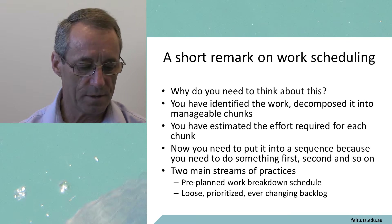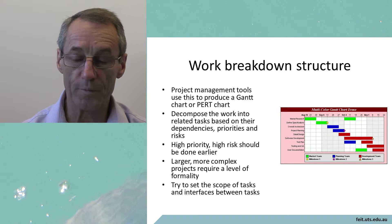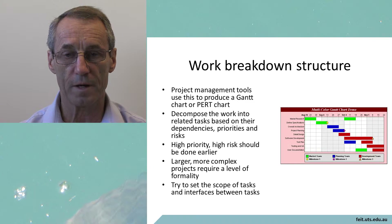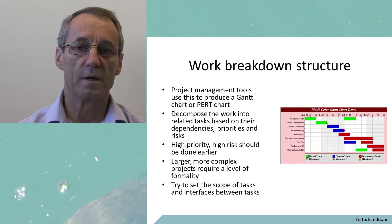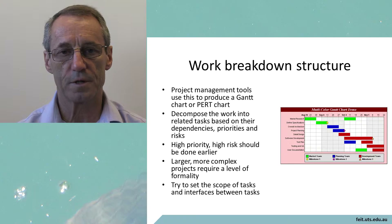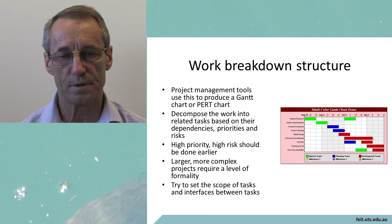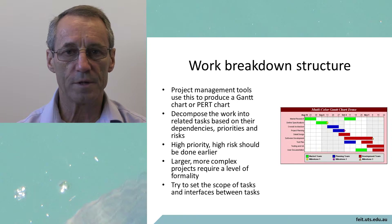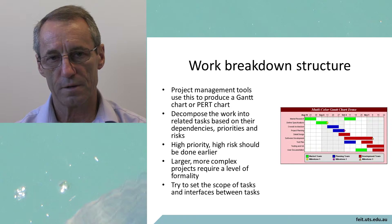There are two schools of thought with this. One is the formal management approach, where you create a Gantt chart full of dependencies and associations. Sequential tasks are arranged together, and tasks that can be done simultaneously and in parallel are identified. Importantly, the dependencies — what must be finished before something else can start — get identified.